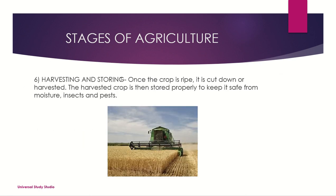Number six: harvesting and storing. Once the crop is ripe, it is cut down or harvested. The harvested crop is then stored properly to keep it safe from moisture, insects, and pests. You can see it being machine harvested here, and you can also harvest it by hand.